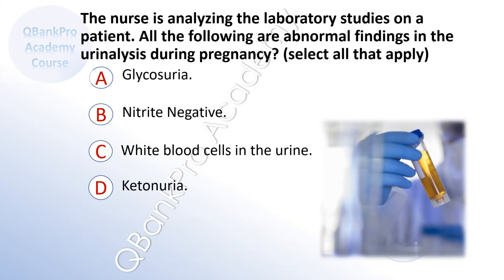The nurse is analyzing laboratory studies on a patient. All the following are abnormal findings in the urinalysis during pregnancy — select all that apply. A. Glycosuria. B. Nitrate negative. C. White blood cells in the urine. D. Ketonuria.